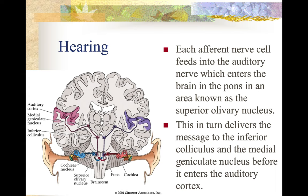Each afferent nerve cell feeds into the auditory nerve, which enters the brain in the pons in an area known as the superior olivary nucleus. This in turn delivers a message to the inferior colliculus and the medial geniculate nucleus before it enters the auditory cortex. The auditory cortex is in the temporal lobe of your brain.